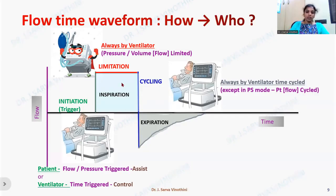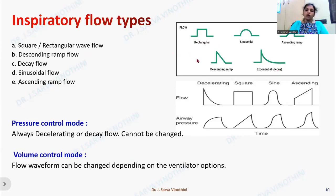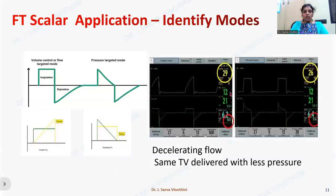The inspiratory flow can follow various patterns: rectangular, sinusoidal, ascending ramp, descending ramp, or exponential. It is usually rectangular in volume control mode, but can take any pattern. In pressure control mode, it should always be a descending ramp or exponential flow pattern. In normal spontaneous breathing, we see a sinusoidal flow pattern. So pressure control mode always has a descending ramp or exponential pattern, whereas volume control mode can have any kind of flow pattern.